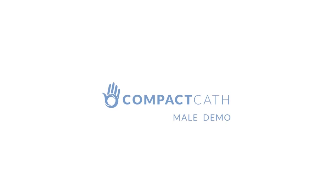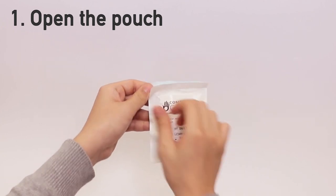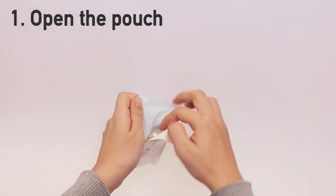This short video will teach you how to use compact cath. Open the pouch by peeling back the blue layer from the white and take the catheter out of the pouch.